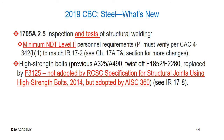Moving on to steel — for 1705A.2.5, inspections and tests of structural welding, there are no necessarily new tests, but we're recognizing requirements for non-destructive testing personnel, who must meet a minimum NDT level. Recall this is one of the elements you must verify based on administrative code section 4-342B1, and this minimum personnel level must match the requirements in IR-17-2. See chapter 17A T&I section for more associated changes.